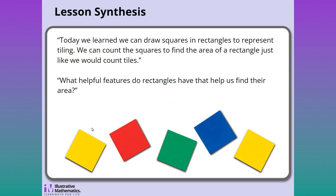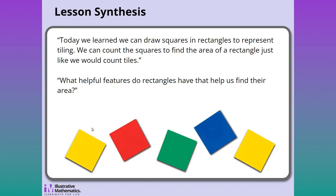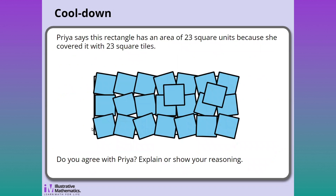The lesson synthesis wraps up the learning, and students are asked what helpful features of rectangles help them find their area. What's amplified is that by counting and knowing the side length of a rectangle, you can find its area. The final piece is the cool-down, a formative assessment taking about five minutes at the end of the lesson where teachers can see individually where students landed with the learning of the day.